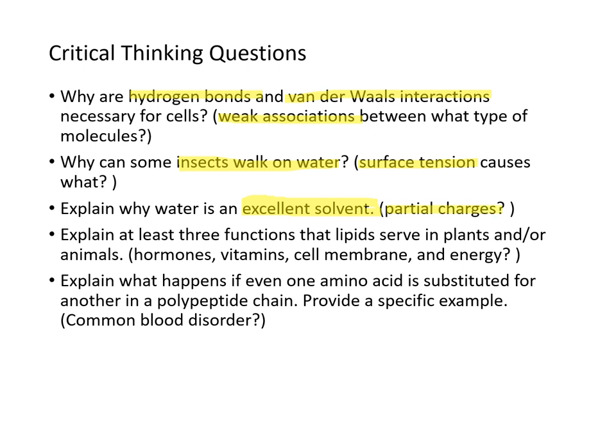Explain at least three functions that lipids serve in plants and/or animals — hormones, vitamins, cell membranes, and energy storage. What happens if even one amino acid is substituted for another in a polypeptide chain? A common blood disorder called sickle cell anemia results from just such a substitution — it's called sickle cell because the cell looks like a sickle.